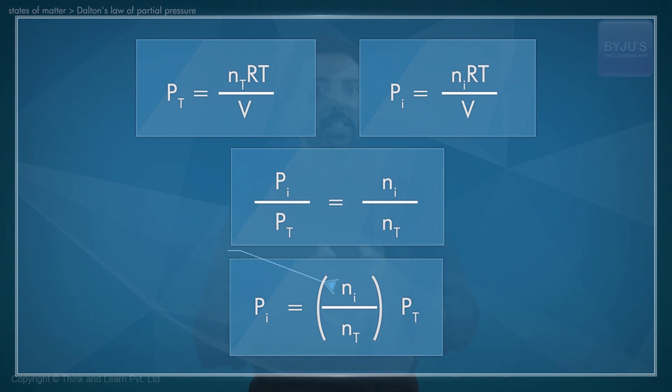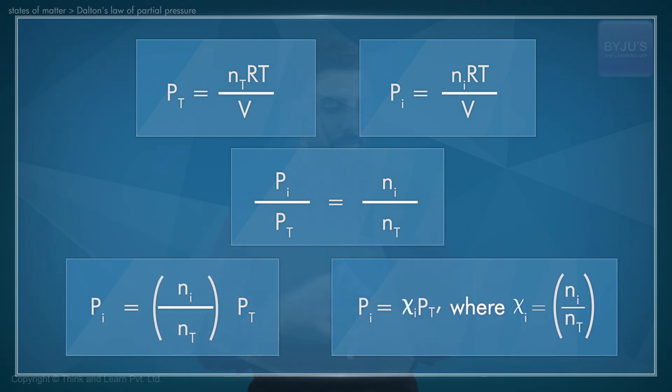But Ni by Nt is the mole fraction of the component i, and thus we get Pi equals χi times the total pressure PT, where the Greek symbol χi refers to the mole fraction of the component i.